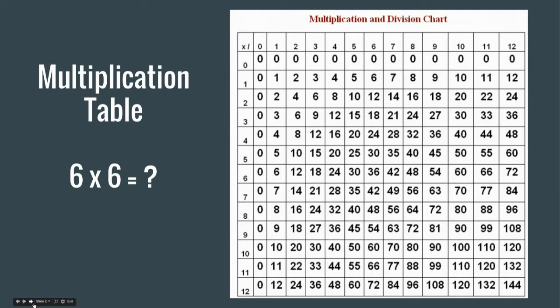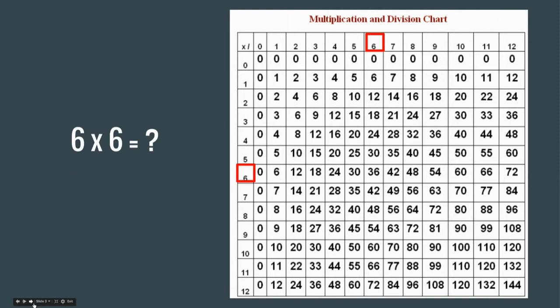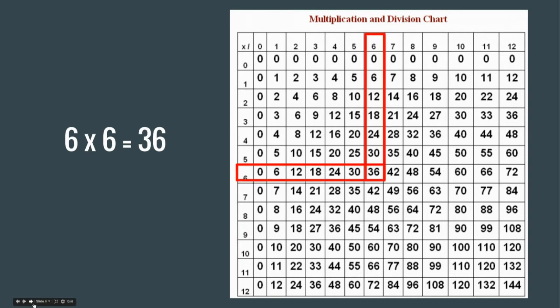And you can use this table to find your multiplication fact answers. So for example, if I had this multiplication problem, 6 times 6, what I could do is I could find the 6 along the top row and the 6 along the first column. Then you just draw your fingers, starting at both of those 6's, draw your fingers until they meet at 36. What that means is that 6 times 6 is 36.